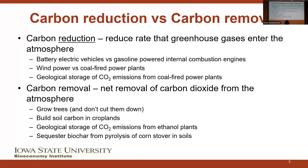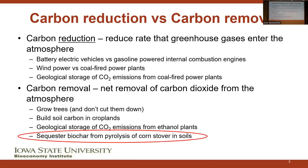I would like to indicate the difference between carbon reduction versus carbon removal. Carbon reduction reduces the rate that greenhouse gases enter the atmosphere. Examples would be substituting battery electric vehicles for gasoline-powered internal combustion engines, wind power versus coal-fired power plants, or geological storage of CO2 emissions from coal-fired power plants. In contrast, carbon removal is the net removal of carbon dioxide from the atmosphere. This can be accomplished by growing trees, building soil carbon in croplands, geological storage of CO2 emissions from ethanol plants, or sequestering biochar from pyrolysis of corn stover in soils.